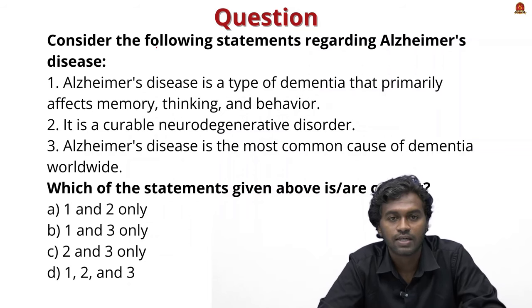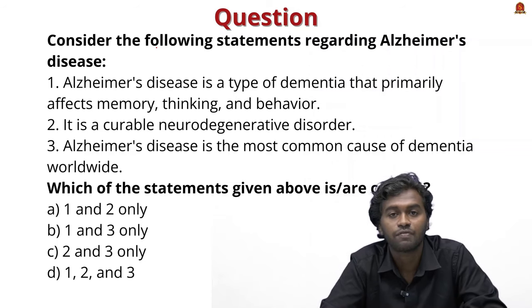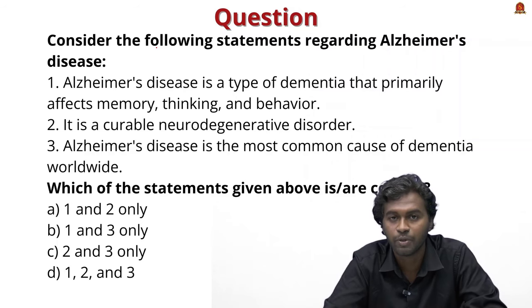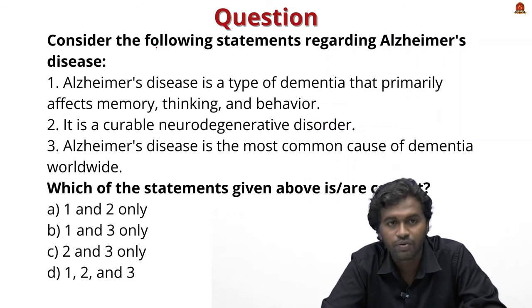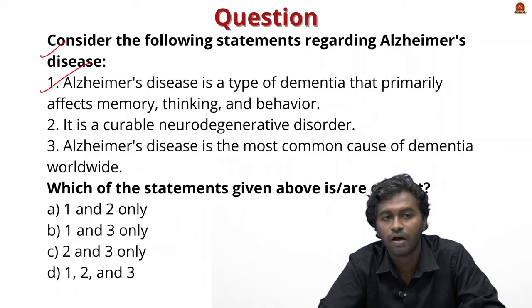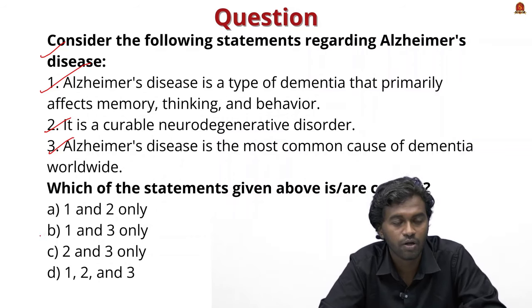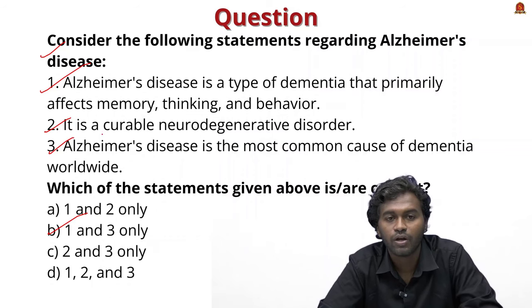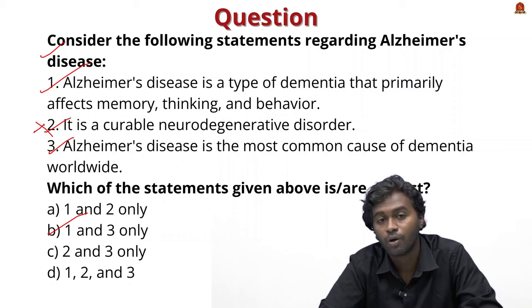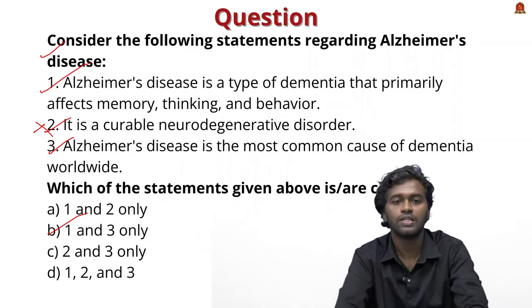Try to answer this prelims question: 'Consider the following statements regarding Alzheimer's disease. Statement 1: Alzheimer's is a type of dementia that primarily affects memory, thinking, and behavior. Statement 2: It is a curable neurodegenerative disorder. Statement 3: Alzheimer's is the most common cause of dementia worldwide.' Which statements are correct? Option A: 1 and 2 only. Option B: 1 and 3 only. Option C: 2 and 3 only. Option D: 1, 2, and 3. The correct answer is Option B — Statement 2 is incorrect because Alzheimer's is a non-curable neurodegenerative disorder.